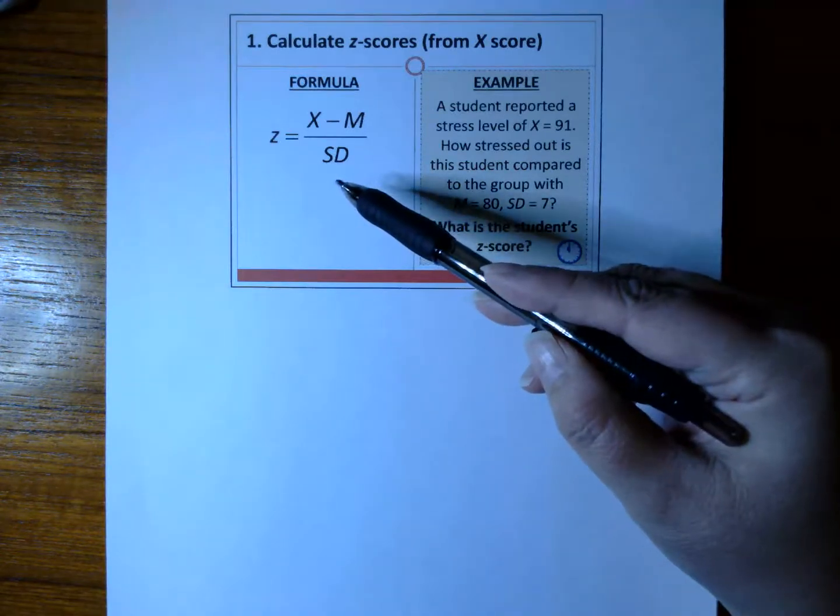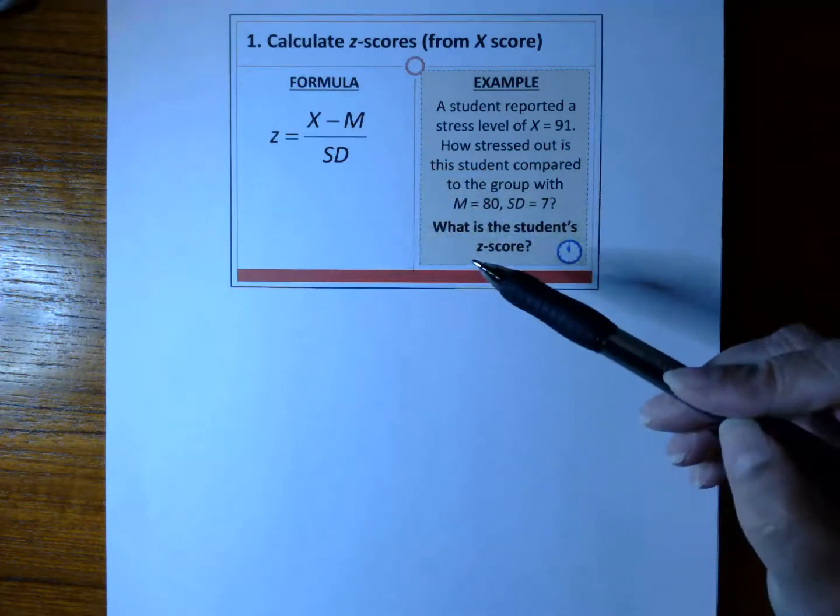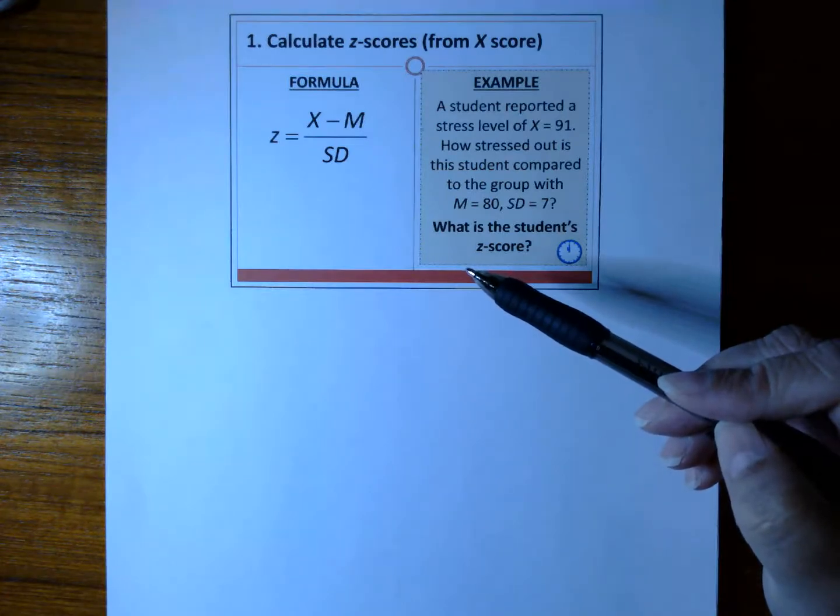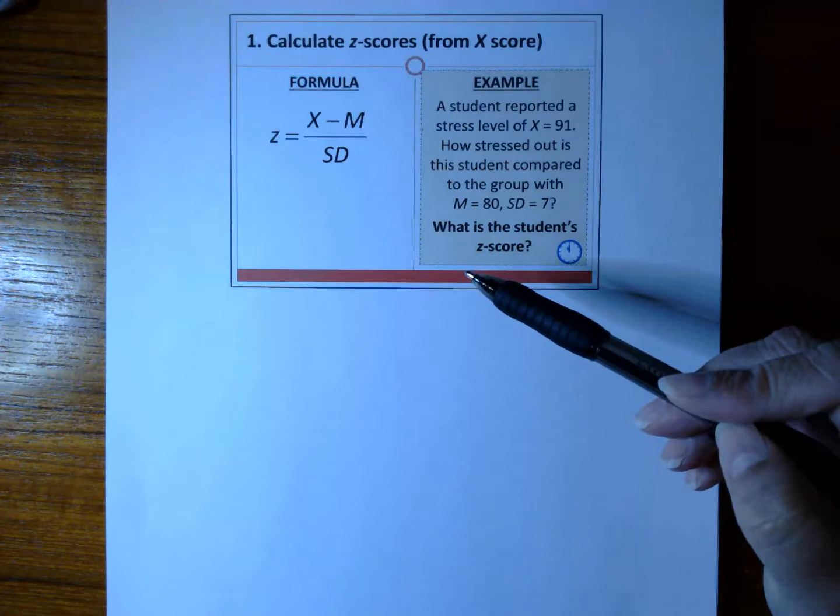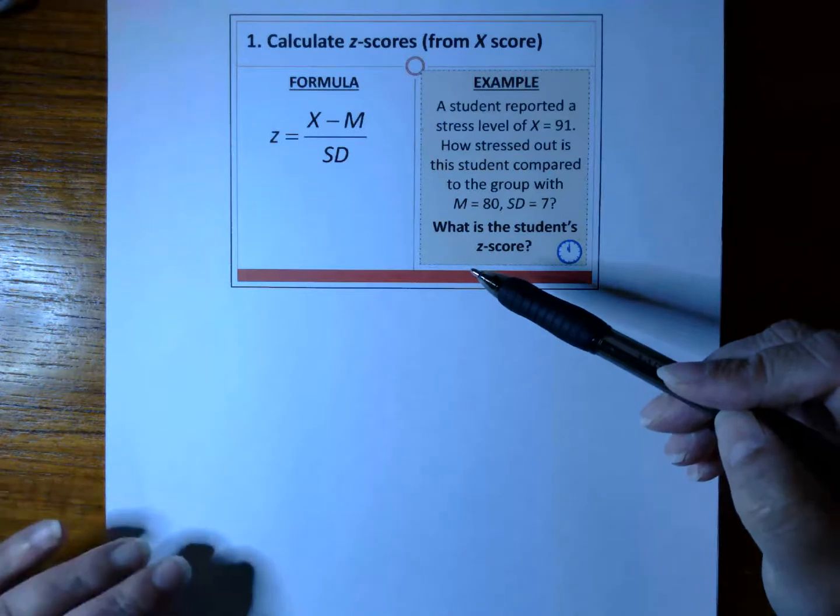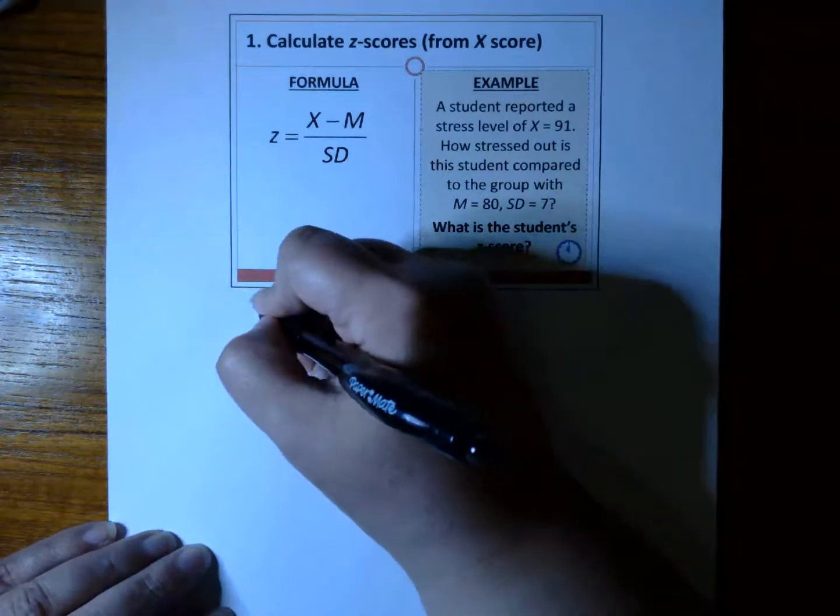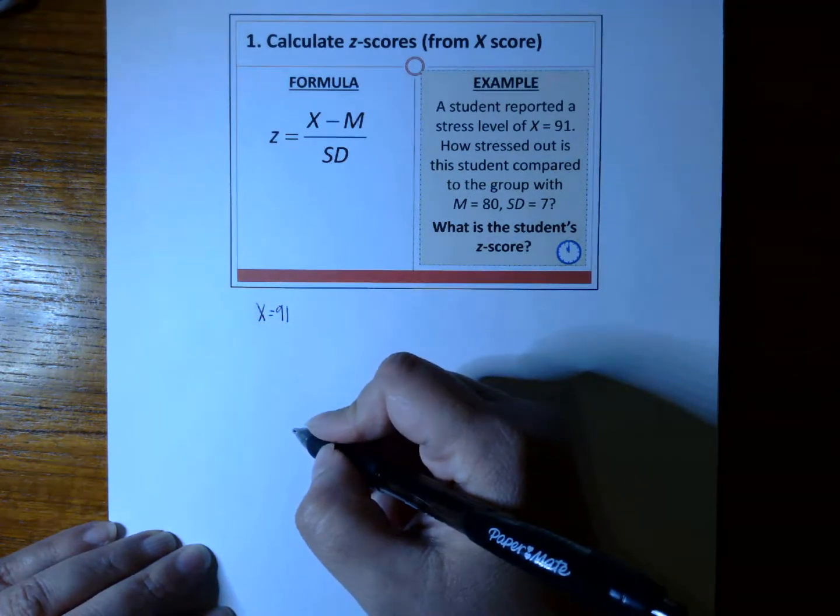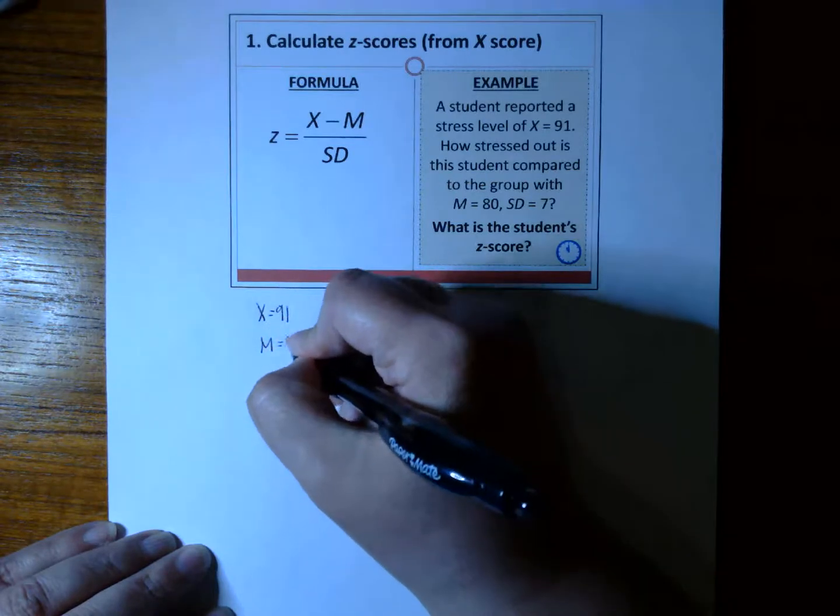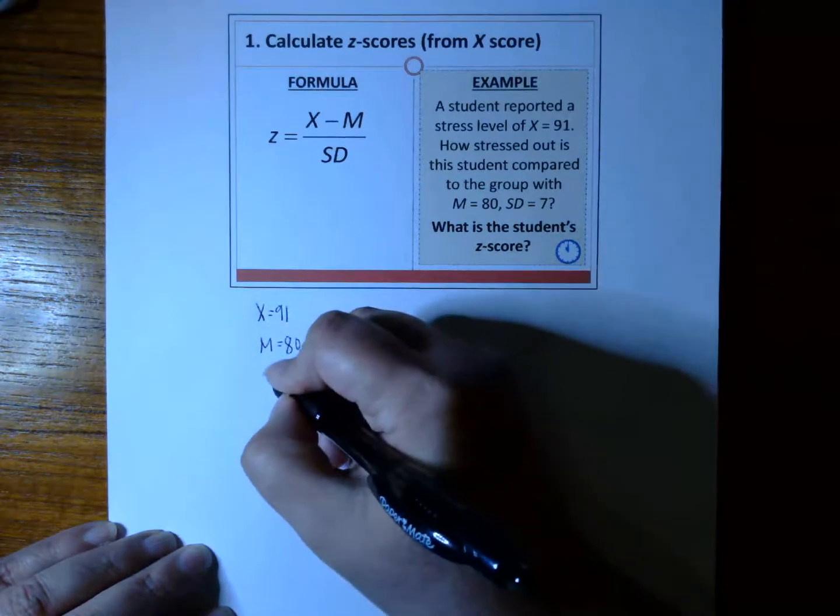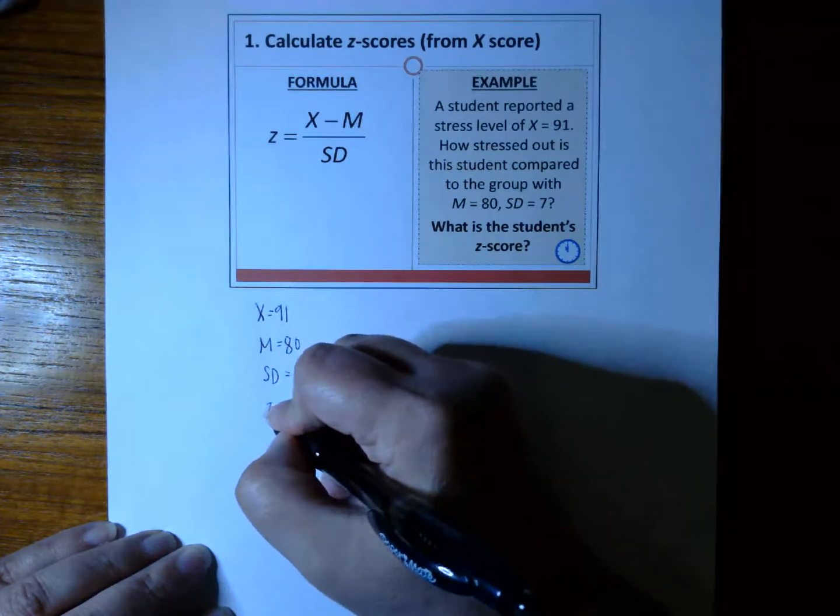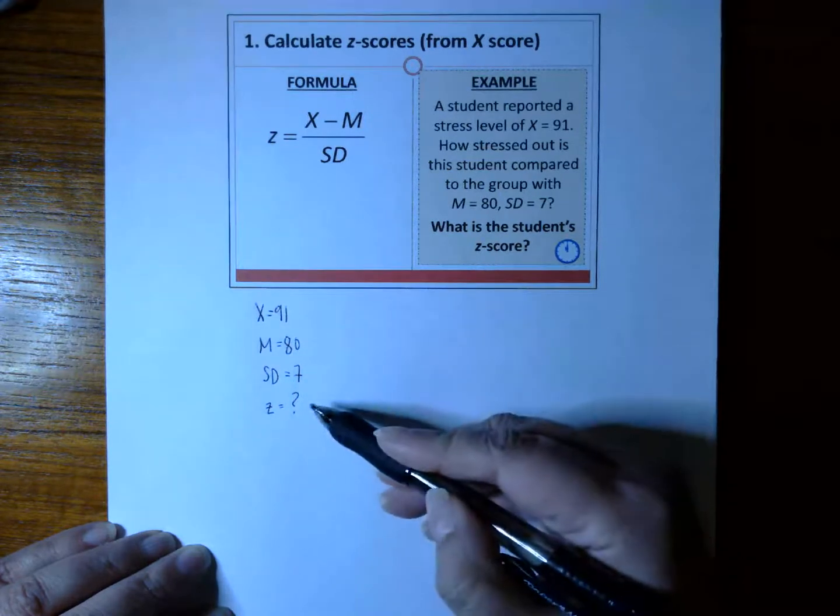This formula here is the formula we will use to calculate Z-scores, and this is our example. With word problems, I want to encourage students to get in the habit of writing out the key values, and it will help you with organizing your information. A student reported a stress level of X equals 91. How stressed out is the student compared to the group with M = 80 and SD = 7? What is the student's Z-score?